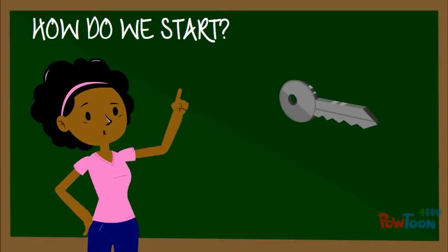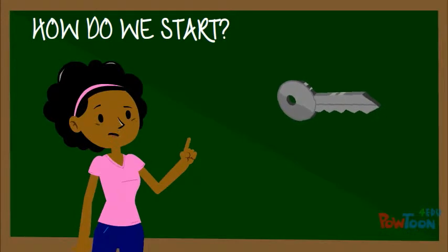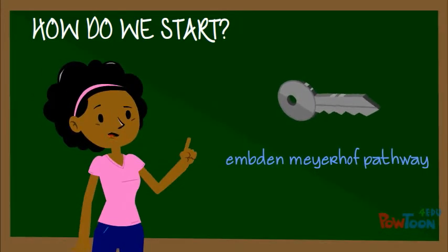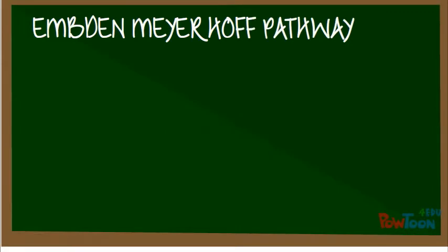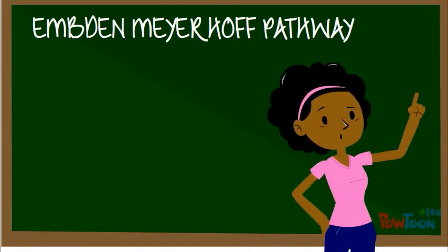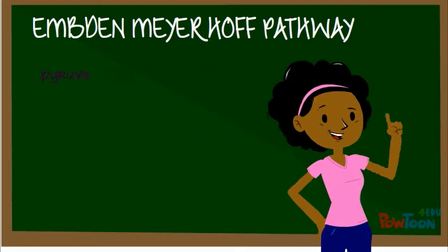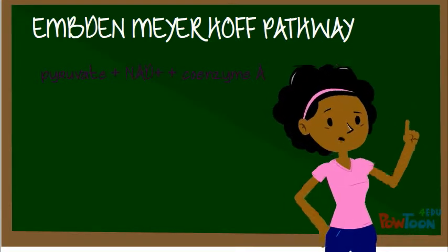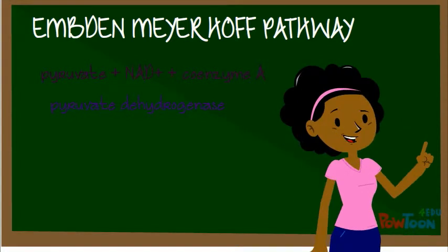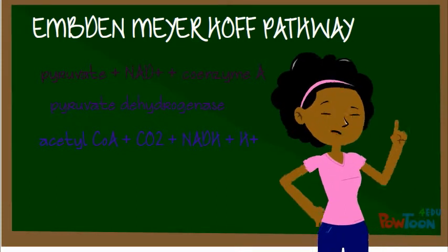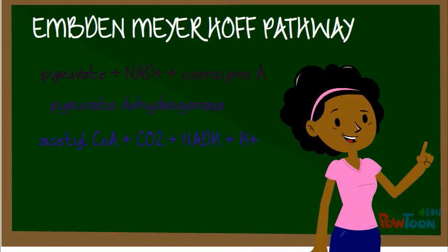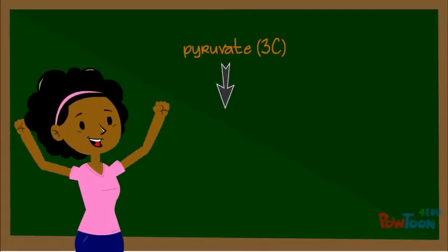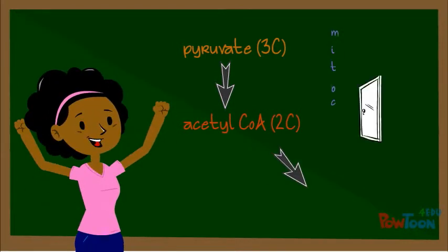The key for entry is for pyruvate to go through the Ebden-Meierhoff pathway. In this pathway, pyruvate plus NAD plus plus coenzyme A use pyruvate dehydrogenase to form acetyl-CoA plus carbon dioxide plus NADH plus H plus. Now that the 3-carbon pyruvate has made 2-carbon acetyl-CoA, it can enter into the mitochondria to the Krebs cycle.